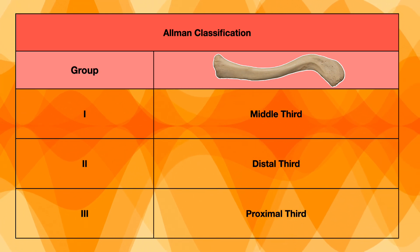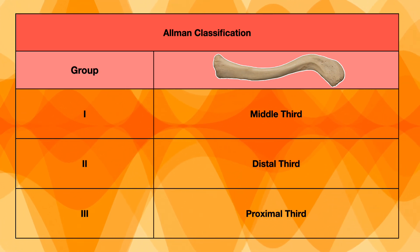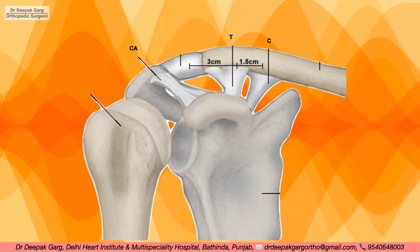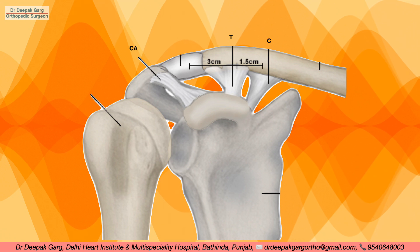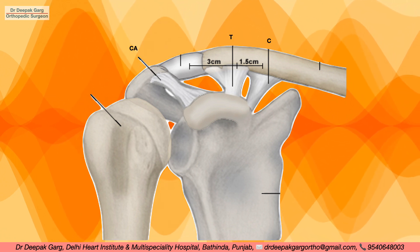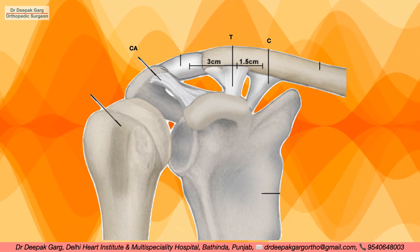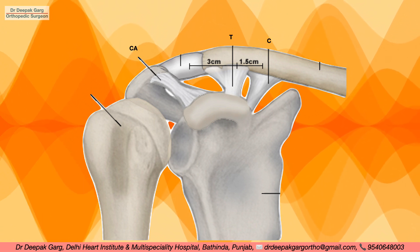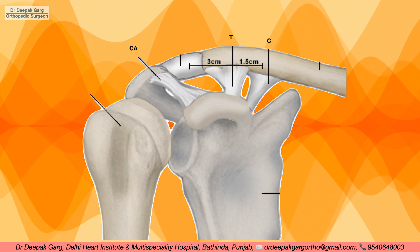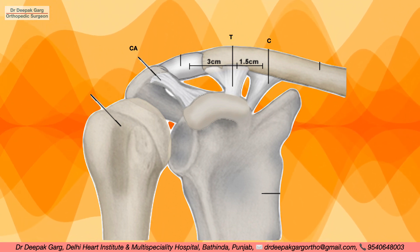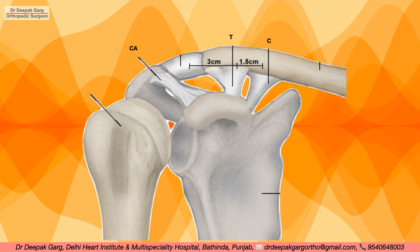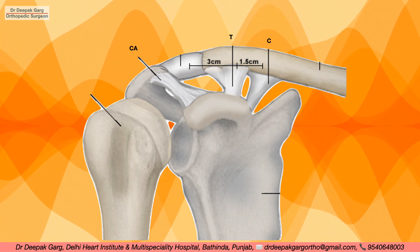Let's understand the anatomy of the distal third of the clavicle. This is the distal third of the clavicle showing the ligaments attached between the coracoid and the clavicle. The ligament labeled C is the conoid ligament, the ligament labeled T is the trapezoid ligament, and the ligament from the coracoid to the clavicle labeled CA is the coracoacromial ligament.